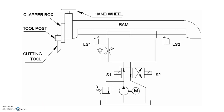In this shaping machine, we know the working of a shaping machine. Here the workpiece will be stationary and the tool will be the moving one. The tool is attached to the tool post and the tool post is connected to the ram. That ram will have a to-and-fro motion, which can be driven by electrical, pneumatic, or hydraulic systems. Here we are discussing the hydraulic to-and-fro motion of the shaping machine ram.